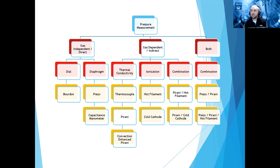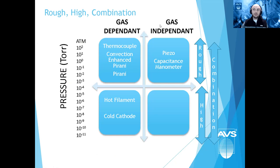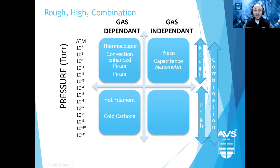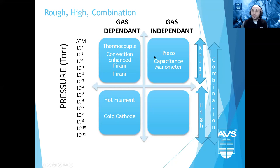Looking at the range of technologies: thermocouples, convection-enhanced Piranis, and standard Piranis typically measure from atmosphere down to 10⁻⁴. Hot filament and cold cathodes cover the 10⁻³ to 10⁻⁴ range down into 10⁻⁹, some to 10⁻¹¹ or 10⁻¹². Piezos measure down to about one torr, and capacitance manometers can measure various ranges from atmosphere down to around 10⁻⁶.